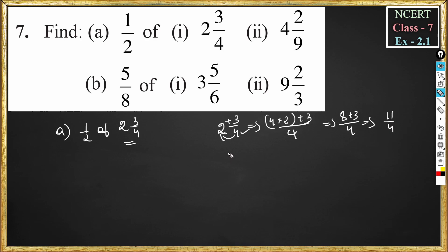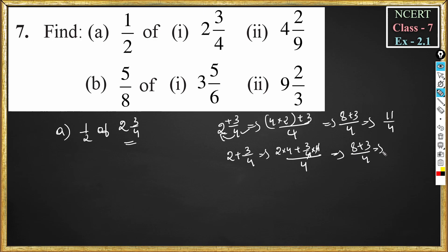You could also do this by adding 2 plus 3 by 4. The LCM is 4, so 2 into 4 over 4, plus 3 by 4. The 4 gets cancelled, giving 8 plus 3 by 4, so the answer also becomes 11 by 4.